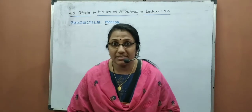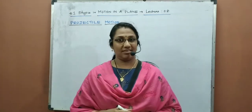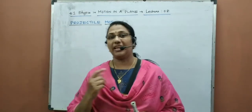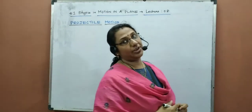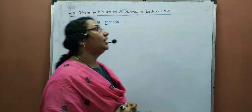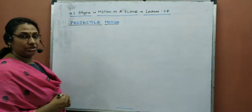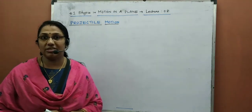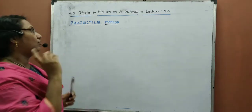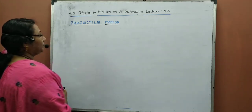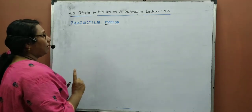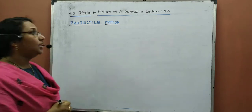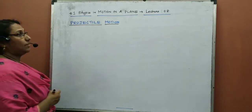Till now, we were discussing vectors for our motion in plane surface. Today we have to discuss projectile motion. This is the first example of motion in a plane surface — motion in two dimensions. So, we are going to discuss what is projectile motion.